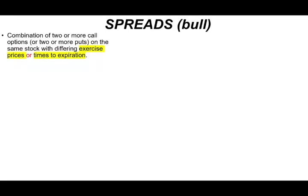So let's take a look at spreads and options, and specifically a bull spread. How does it work? What's a bull spread? Well, a bull spread is a combination of two or more call options or put options. So you're either buying two calls, you're dealing with two calls or two puts on the same stock with differing exercise prices or times to expiration.